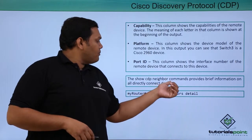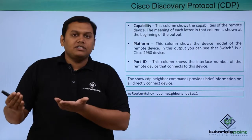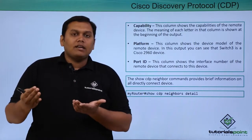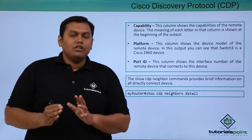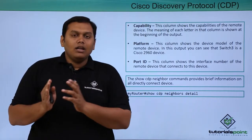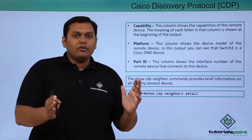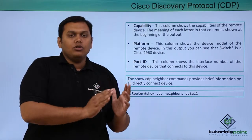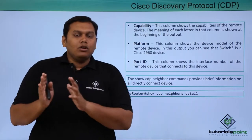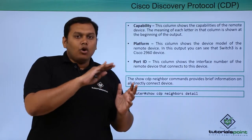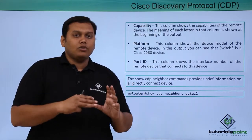'Show CDP neighbors' will also show the details of neighbors entirely: from which interface it is connected, the hold time with that interface, and what packets are sent in every advertisement. This is all about Cisco Discovery Protocol — it is solely a Cisco protocol and no other third-party vendors can use it. However, by using LLDP (Link Layer Discovery Protocol) you can perform all the functions of CDP, and third-party vendors can also interact with Cisco routers using LLDP.